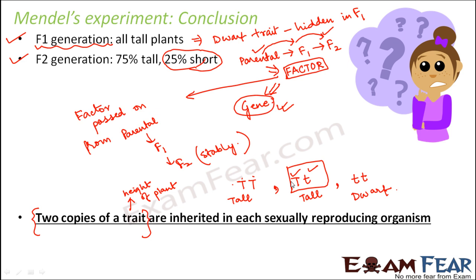This concept of one trait being expressed and the other being hidden is where the principle of dominance comes into picture. To summarize: Mendel crossed tall and short plants, found all F1 were tall, then self-pollinated F1 and found some F2 plants were short. He concluded every trait has two copies — one from each parent. Which trait gets expressed depends on dominance: the dominant trait gets expressed and the other remains hidden. Next we will talk about genes in detail, then move on to dominance.